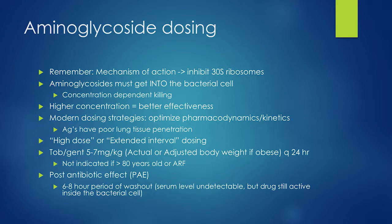Extended-interval aminoglycoside dosing means tobramycin or gentamicin 5–7 mg/kg given every 24 hours, rather than traditional 2–3 mg/kg every 8 hours. You give a super high dose — 7 mg/kg tobramycin — you get really high concentrations so it works better. Around the 18-hour mark the drug is actually completely washed out of the system, leaving a 6 to 8-hour period of no measurable drug.